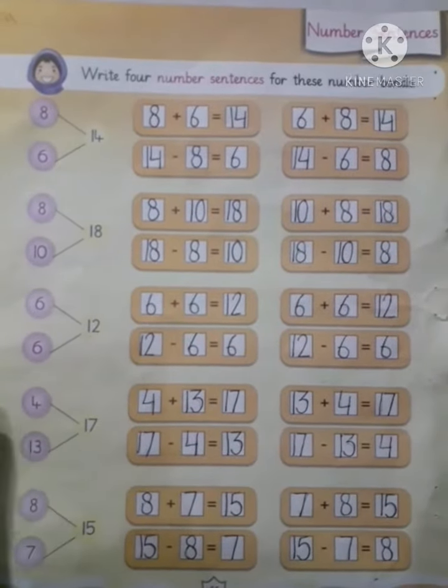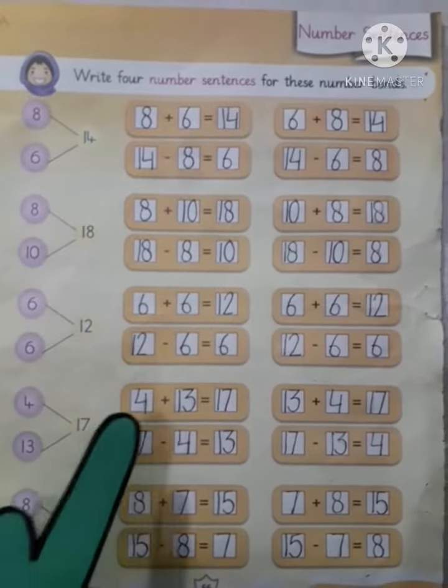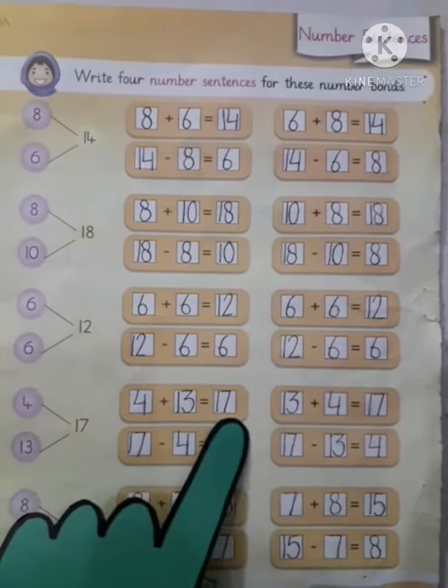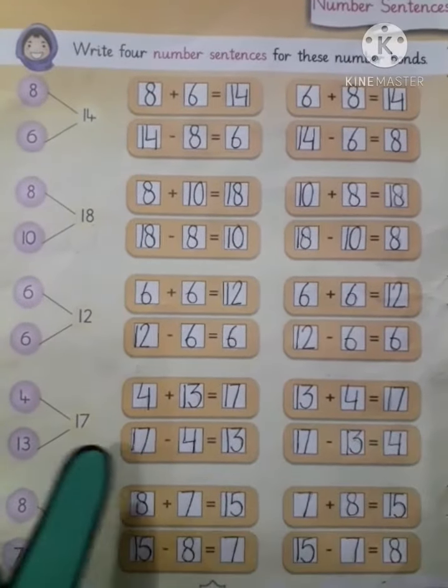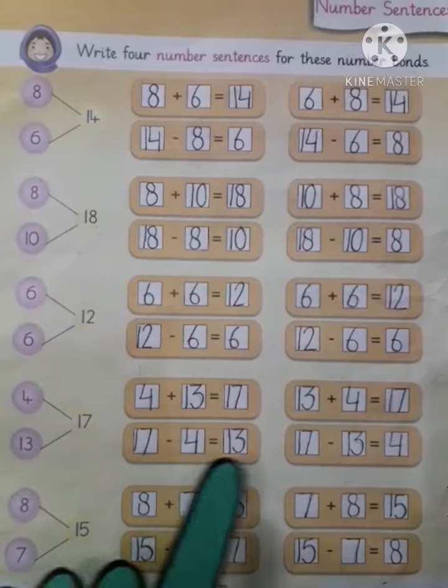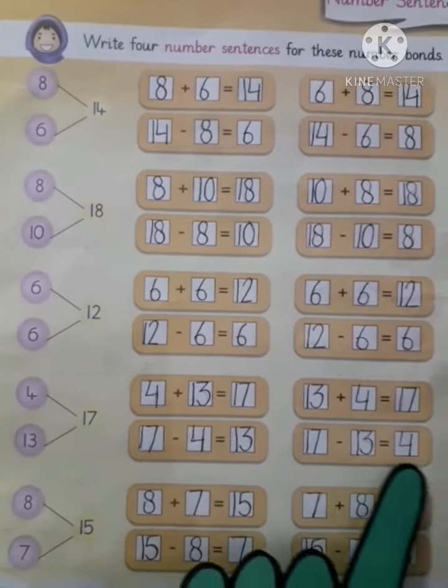The whole number is 17. One part is 4 and other part is 13. 4 plus 13 equals 17, 13 plus 4 equals 17. 17 minus 4 equals 13, and 17 minus 13 equals 4.